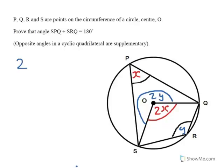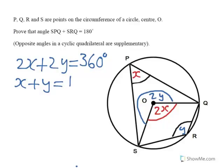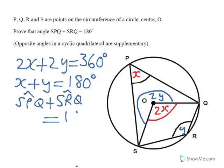So we can say 2x plus 2y equals 360 degrees. If you divide throughout by 2, you get x plus y equals 180 degrees. And the angle x is SPQ, and the angle y is SRQ, and they add up to 180 degrees.